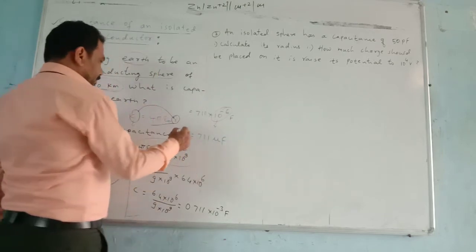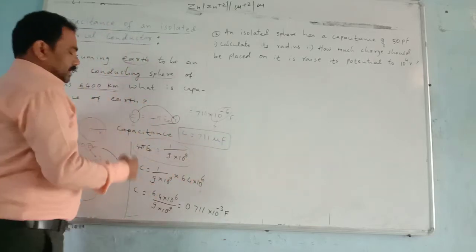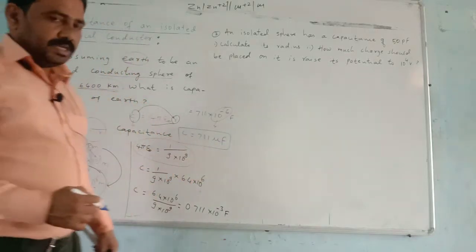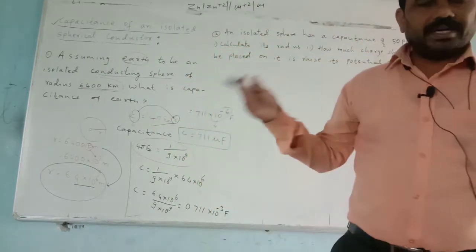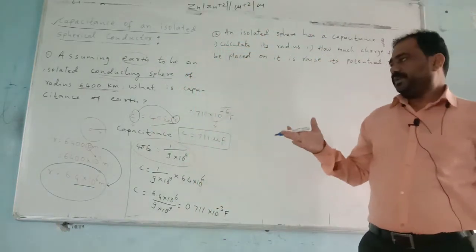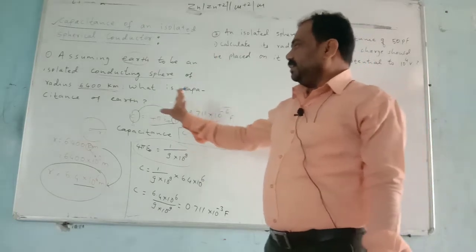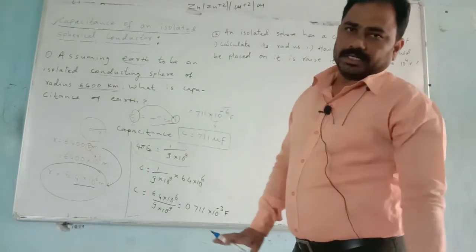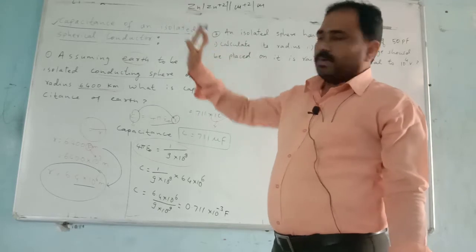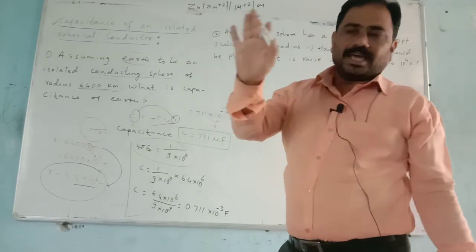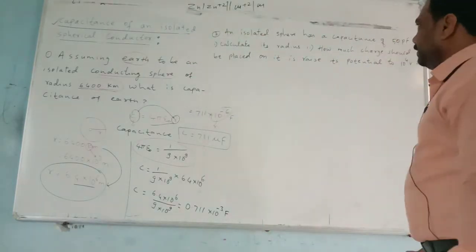So this will be the capacitance of our Earth, since the radius was already given to us. In this way, we can calculate the capacitance of a spherical conductor. You have to assume Earth as an isolated conducting sphere.